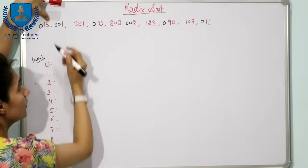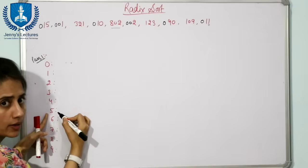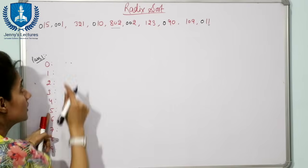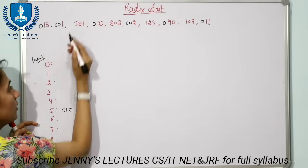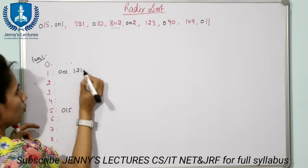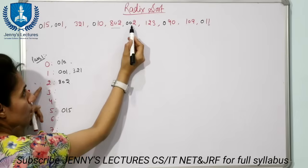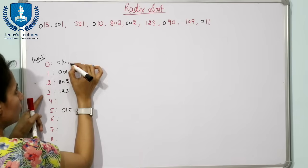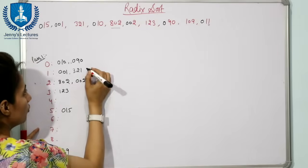First, check the number 015 — the least significant digit is 5, so we put it in bucket 5. Next number is 001 — digit is 1, goes into bucket 1. We check each number's ones digit: another 1 goes to bucket 1, a 0 goes to bucket 0, a 2 goes to bucket 2, another 2 to bucket 2, a 3 to bucket 3, another 0 to bucket 0, a 9 to bucket 9.